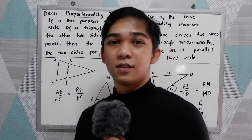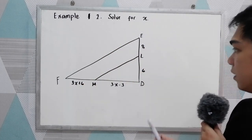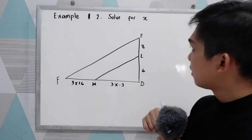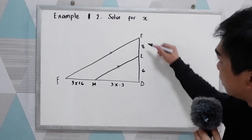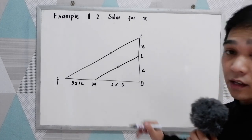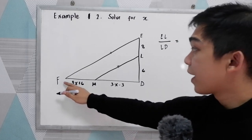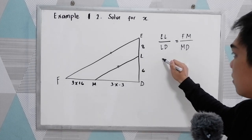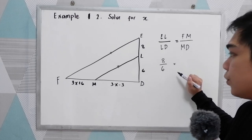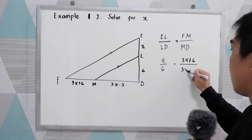Let's have another example. Using the basic proportionality theorem and its converse, we have triangle FED where FE is parallel to ML. We're going to solve for X. We set up EL over LD equals FM over MD: 8 over 6 equals 3X plus 6 over 3X minus 3.